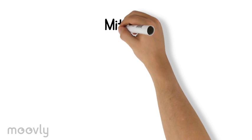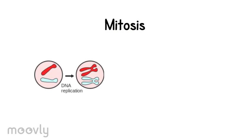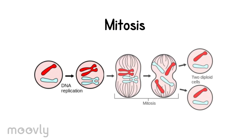We know that eukaryotic cells usually divide by means of mitosis. In this process, the parent cell duplicates its chromosomes before the division so that the two resulting daughter cells receive identical sets of chromosomes, and thus the number of chromosomes is preserved.